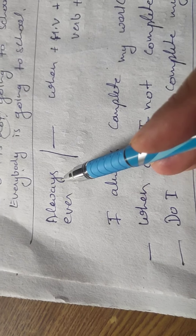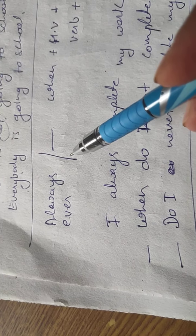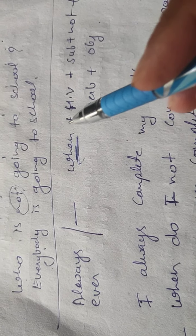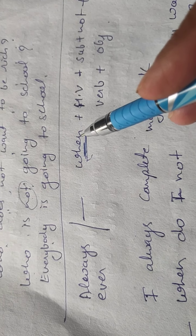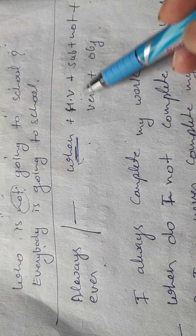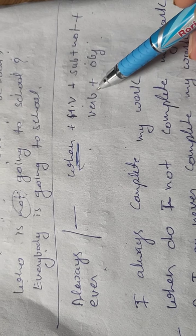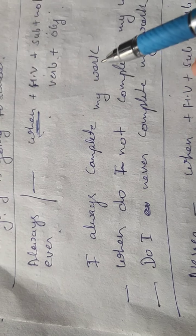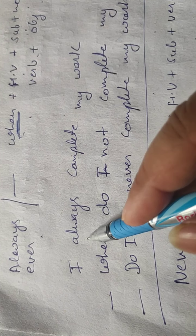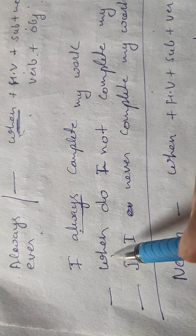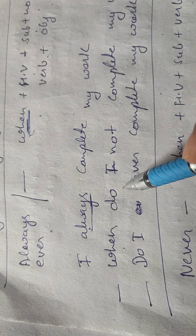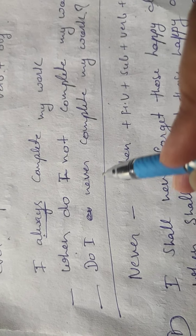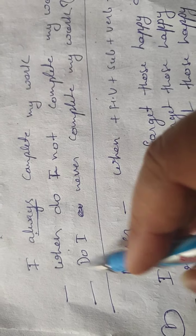The next rule is when you observe ALWAYS or EVER in an affirmative sentence, then you have to write WHEN. The structure is: WHEN + HELPING VERB + SUBJECT + NOT + VERB + OBJECT. Look at the sentence: 'I have always completed my work.' — ALWAYS is here, so you have to write WHEN: 'WHEN DO I NOT COMPLETE MY WORK?' You can also change it as: 'DO I NEVER COMPLETE MY WORK?'